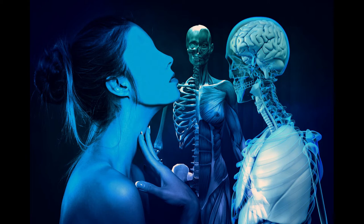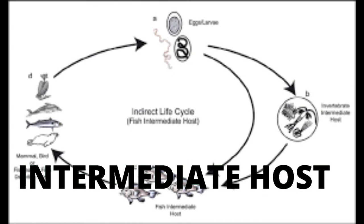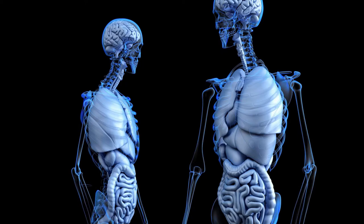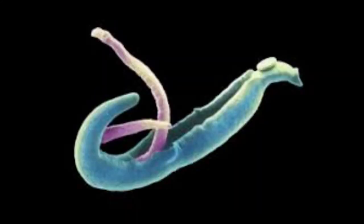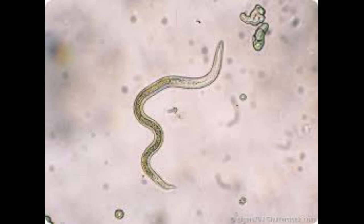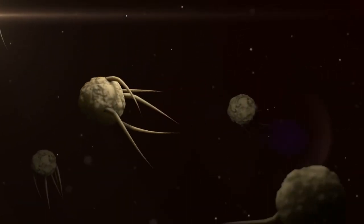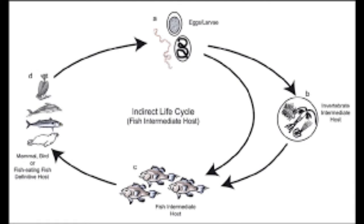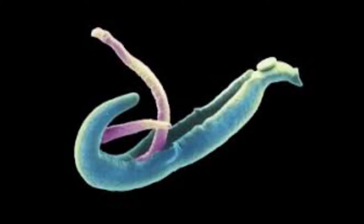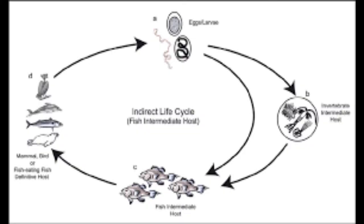The next category of hosts is the intermediate host. This is the host that alternates with the definitive host in harboring the different stages of the life cycle of the parasite — mainly the larvae, or the forms that carry out asexual reproduction. The intermediate host harbors the sexually immature form of the parasite. In some instances, a parasite may have more than one intermediate host, such that you have a first intermediate host and then a second intermediate host.